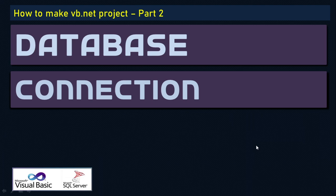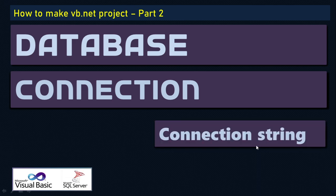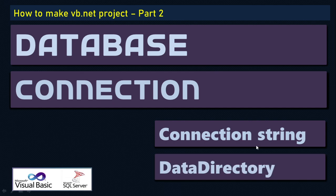Welcome to this video tutorial. In this video, let us understand how to make a database connection, how to get the connection string, and what is the data directory and how to use it. Whenever a connection string has the complete path of where your database is located, in order to avoid that path we can use the data directory, which is an environment variable that will give the path automatically.